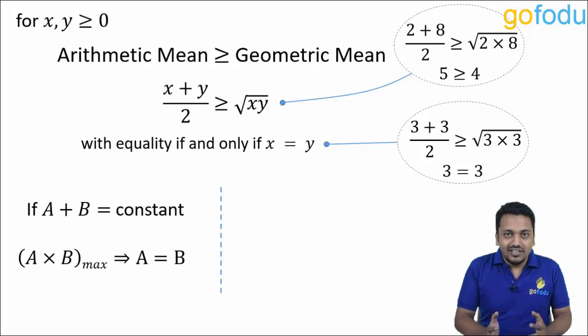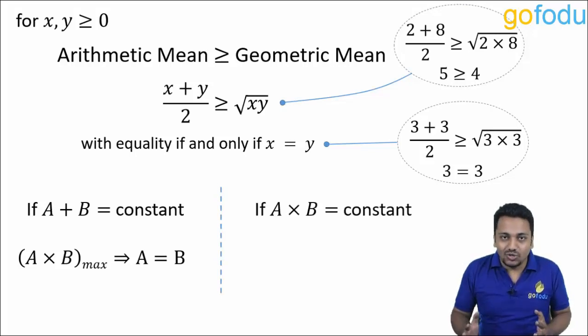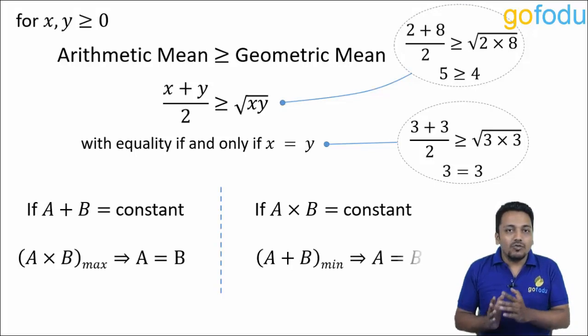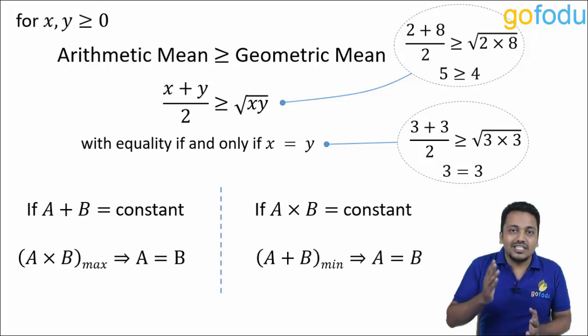Second point is that when A multiplied with B is constant, sum of A and B would be minimum when A is equal to B.